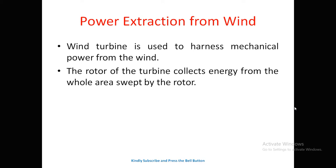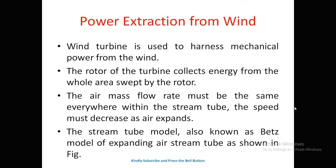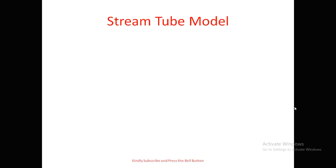The rotor of the turbine collects energy from the whole area swept by the rotor. The air mass flow rate must be the same everywhere within the stream tube — a tube through which wind enters and leaves. The main idea is that air mass flow rate should remain the same and the speed must decrease as air expands. This stream tube model is known as the Betz model of the expanding air stream tube.